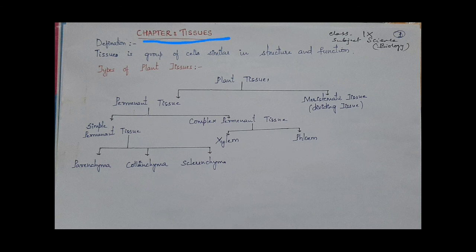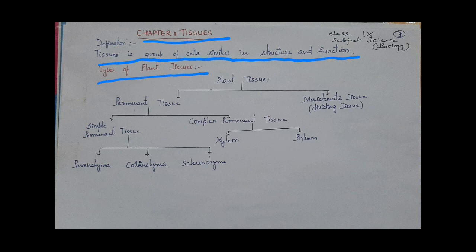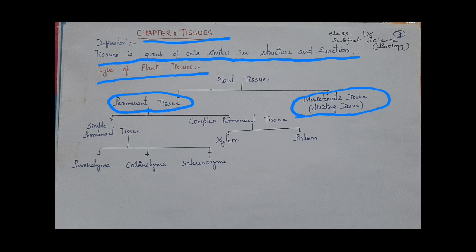Definition of tissue: tissue is a group of cells similarly structured and functioning. The types of plant tissue — plant tissues are divided into two types: permanent tissue and meristematic tissue. Permanent tissue is again divided into two types: simple permanent tissue and complex permanent tissue.